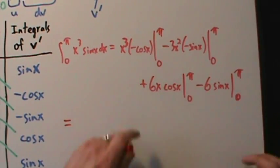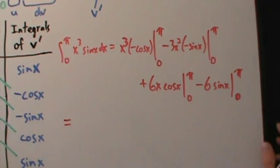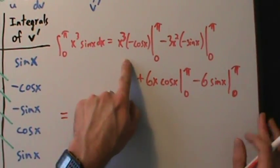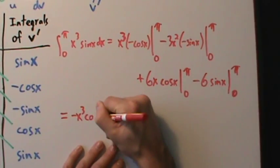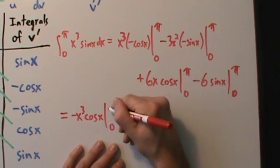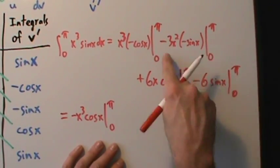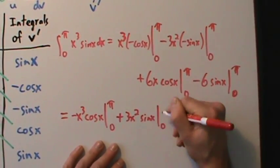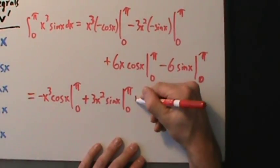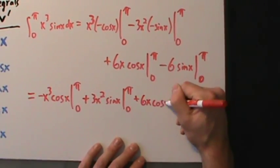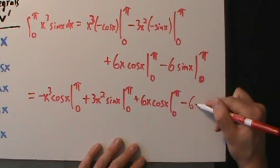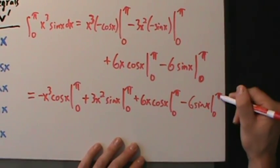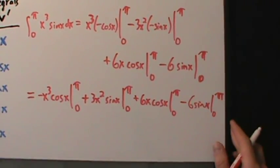Let's simplify first. This becomes negative x³ times cosine of x from 0 to π. Then plus 3x² sine of x from 0 to π. Then plus 6x cosine of x from 0 to π. And minus 6 sine of x from 0 to π.